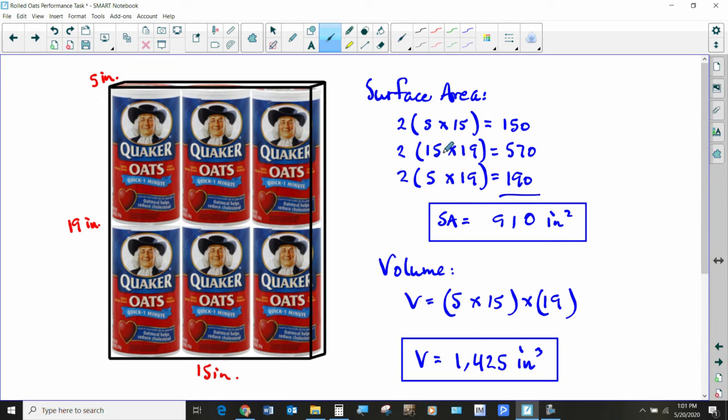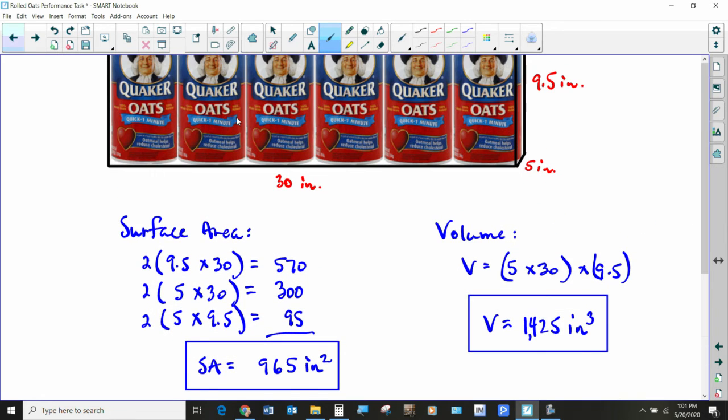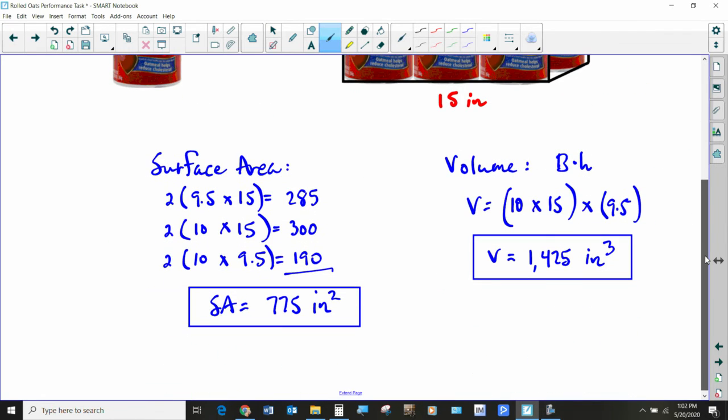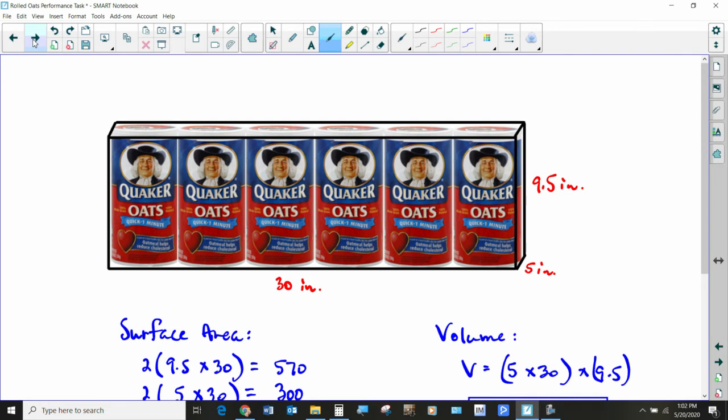And then the depth would just be, since it's only one container deep, it would be five inches. So we've got the front, the 15 by 19. So you've got two of them. This would be the top and the bottom, the 5 by 15s. And then the right and the left would be the two that are 5 by 19. So when you add all those together, you get 910, which is less than the second configuration, but still more than the initial one that I had designed. So far, the first one is the winner.